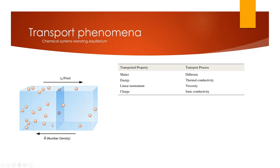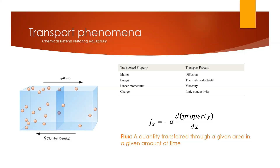Note that this flux also opposes the number density. The number density is highest on the left and the flux goes from left to right because the flux is restoring equilibrium. In the case of diffusion, the flux is simply the number of particles that pass through this area — we have to consider the flux in both directions and add them together. A generic definition of flux uses the symbol J for a directional flux. Flux is equal to some constant alpha, which will be different depending on the property at hand. For diffusion, it will simply be the diffusion coefficient.